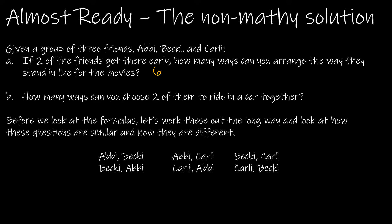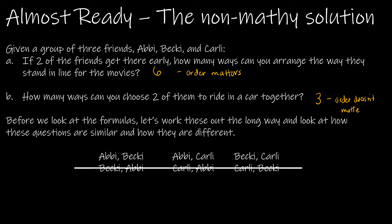Now what if I just wanted them to ride in a car together? Then Abby and Becky riding in the car is the same as Becky and Abby riding in the car. So I would get rid of the ones that look the same but in a different order. How many ways can I choose two of them to ride in a car? There are three ways. The difference is: for the first question order matters, and for the second question order doesn't matter.